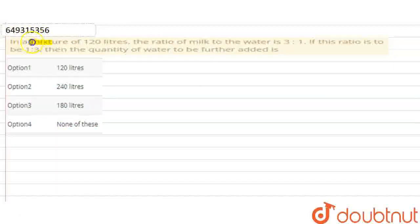Look, in the question, in a mixture of 120 liters, the ratio of milk to water is 3:1. If this ratio is to be 1:3, we want to make the proportion of milk 1 and water 3. Then the quantity of water to be further added we need to find out.